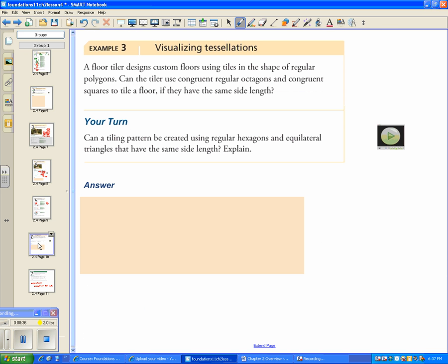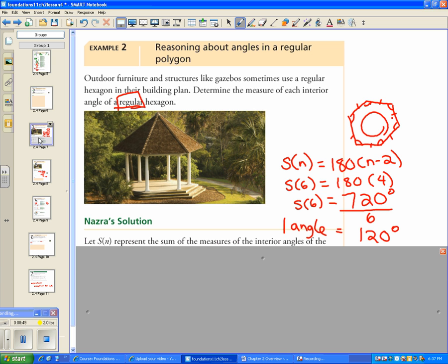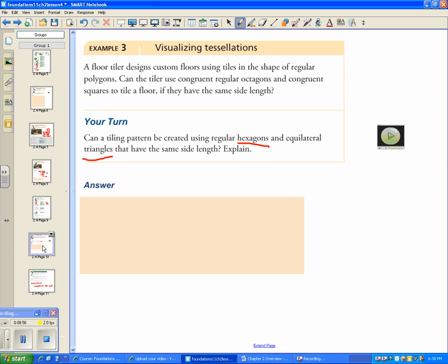Can we create a pattern using regular hexagons and equilateral triangles? We found back here that each hexagon has an angle of 120. Again, regular. All the same sides. So we have 120.